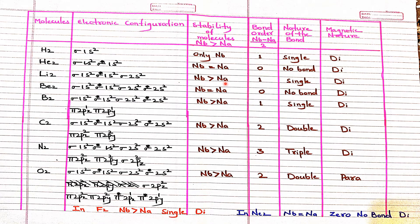For Li₂: Nb > Na, so it is definitely stable. Nb = 4, Na = 2, bond order = (4 − 2)/2 = 1, single bond. For Be₂: each beryllium brings 4 electrons, so Be₂ has 8 electrons total. Nb = 4, Na = 4, bond order = (4 − 4)/2 = 0 — no bond exists, so Be₂ will not exist. For B₂: Nb > Na, so it is stable. Nb = 6, Na = 4, bond order = (6 − 4)/2 = 1, single bond.